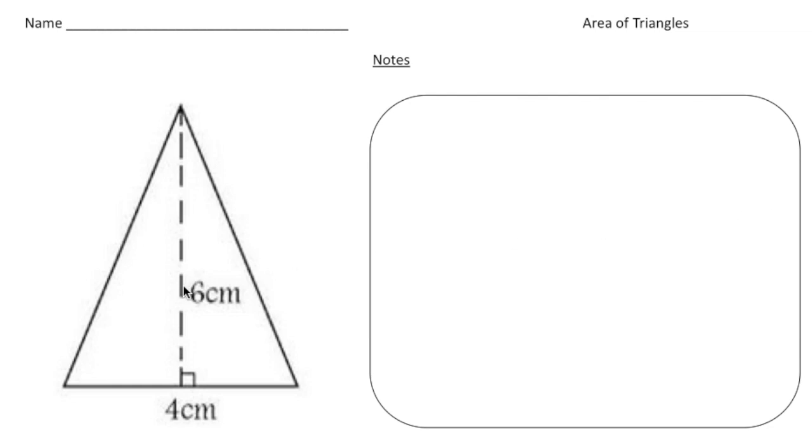Alright, so here we have a triangle with the base of 4 cm and the height of 6 cm. And just a reminder, the height makes a right angle with the base.